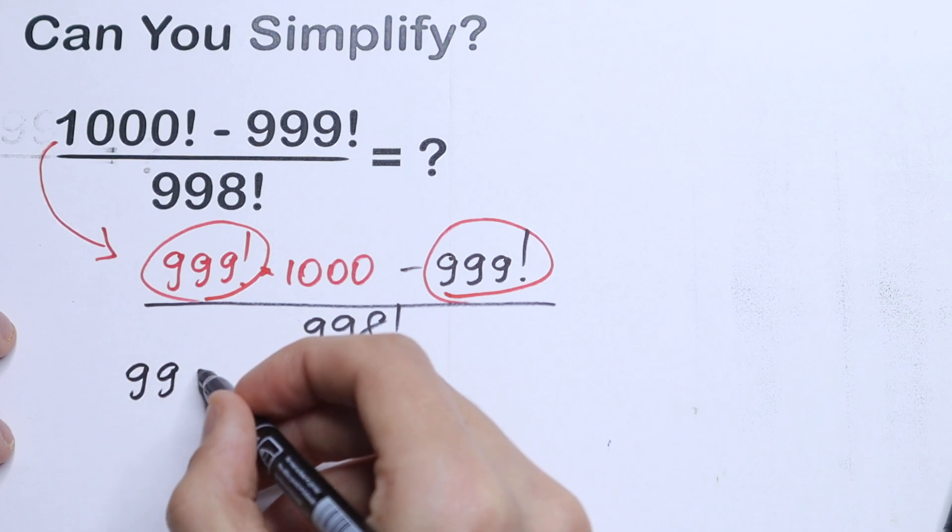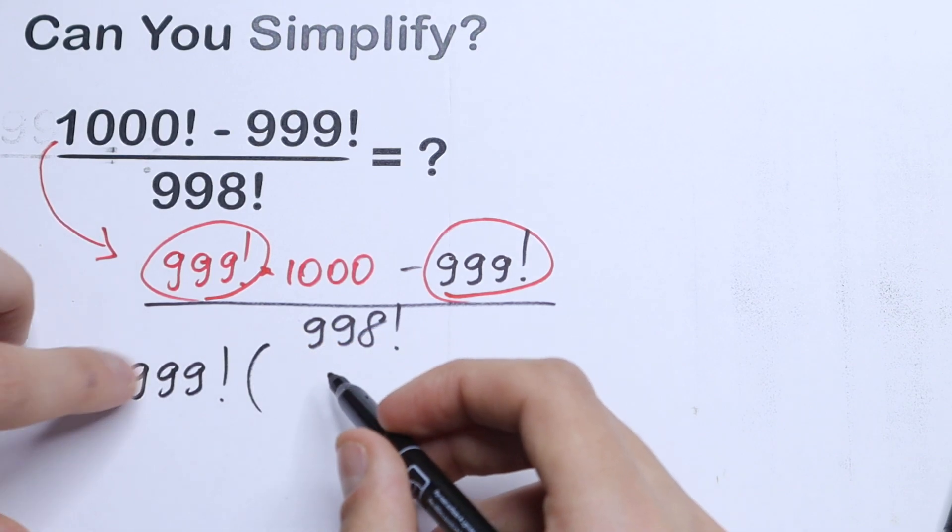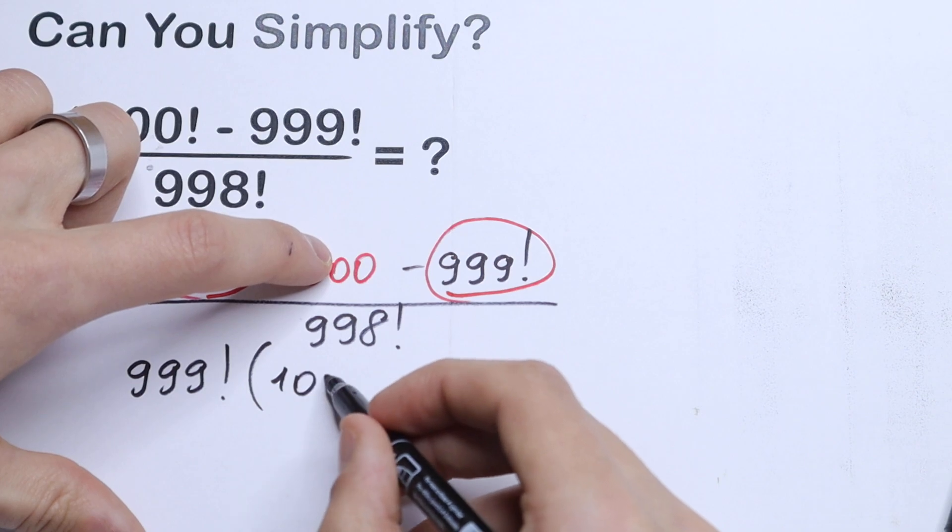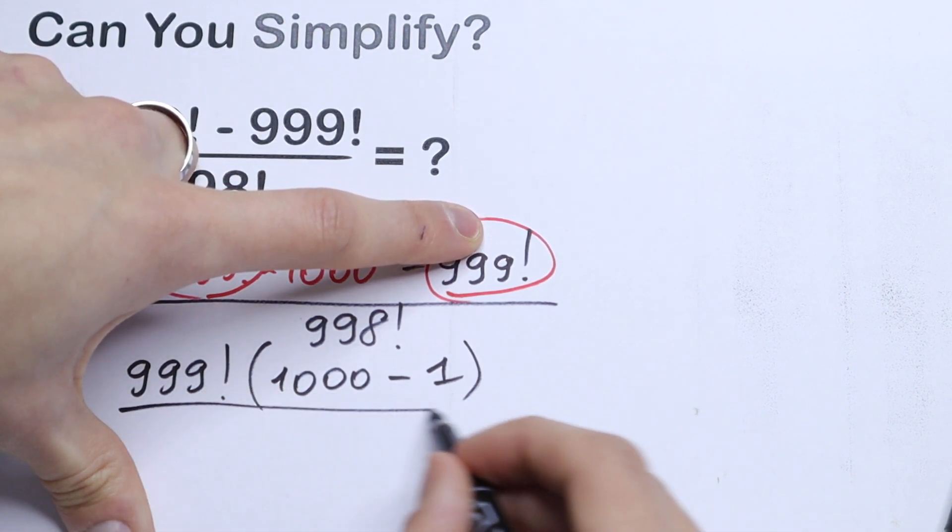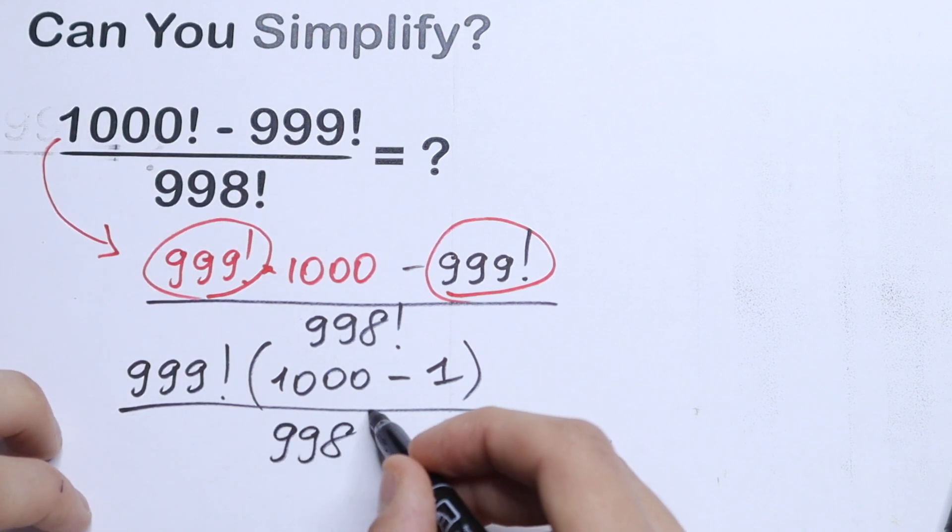What we will have? We will have 999 factorial and in parentheses we will have from here 1000, minus, and from here only 1, all divided by 998 factorial.